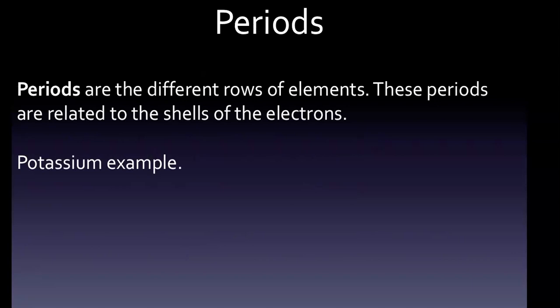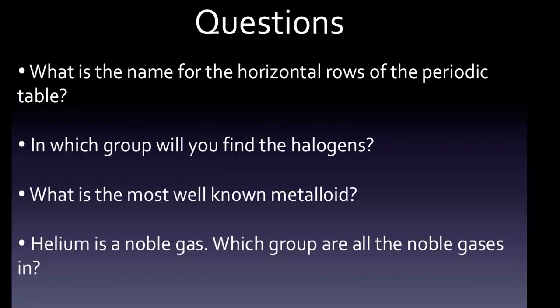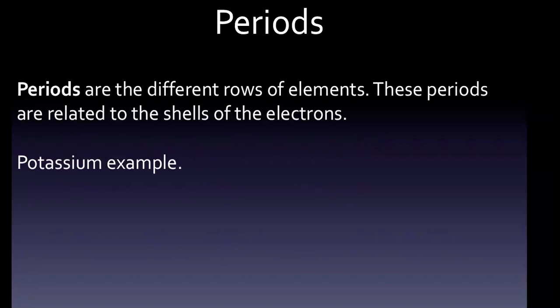Periods are the different rows of elements. That's the very first question: what is the name of the horizontal rows? These periods are related to the shells of the electrons. As an example, potassium is in the fourth period and has an outermost shell of one electron, and therefore its valence configuration is 4s to the first.